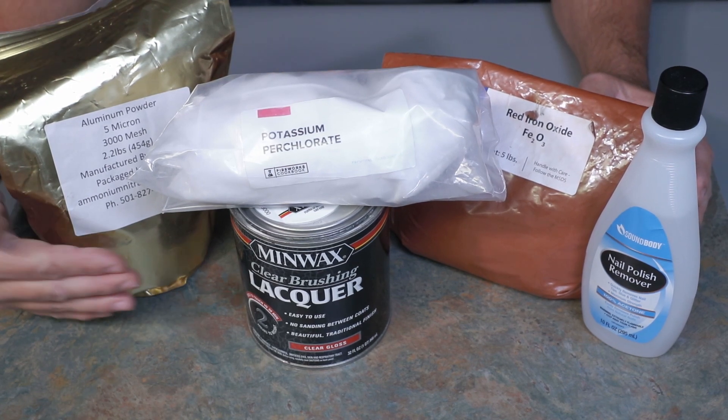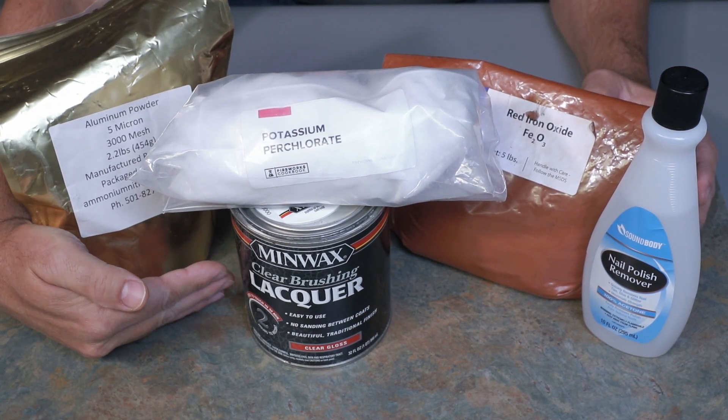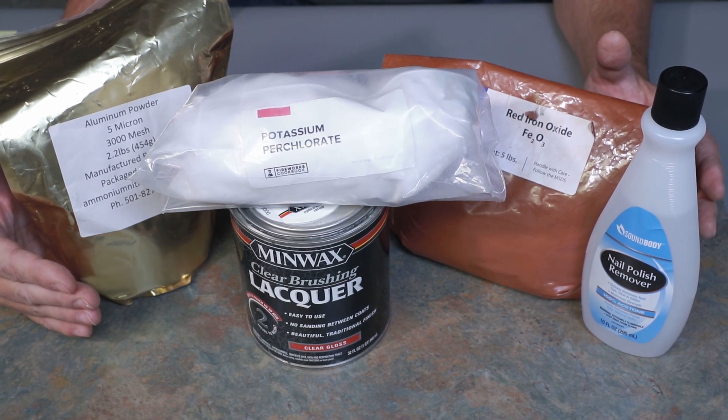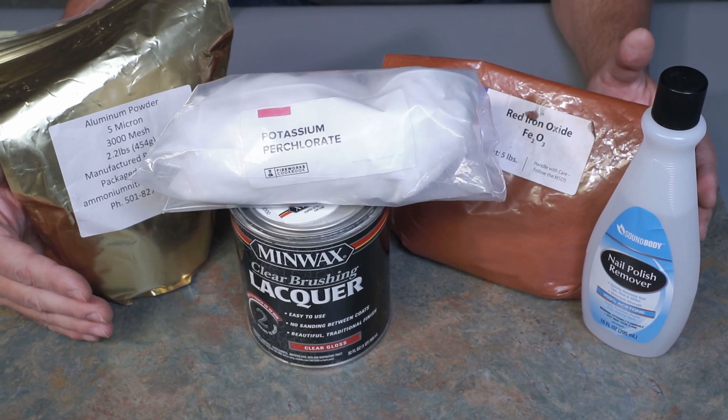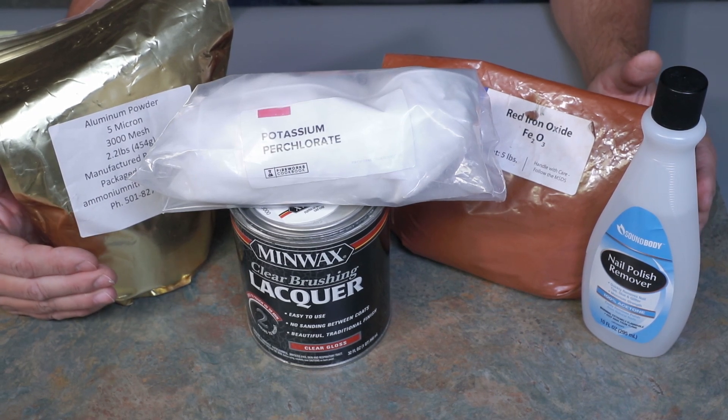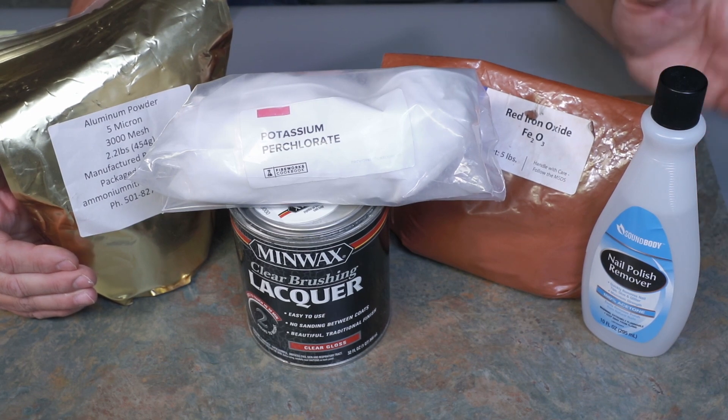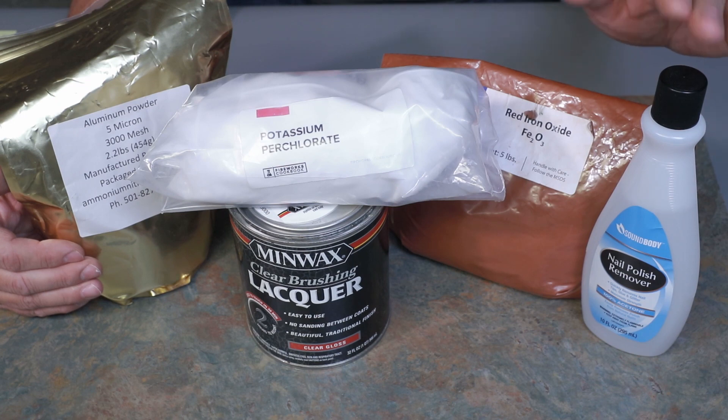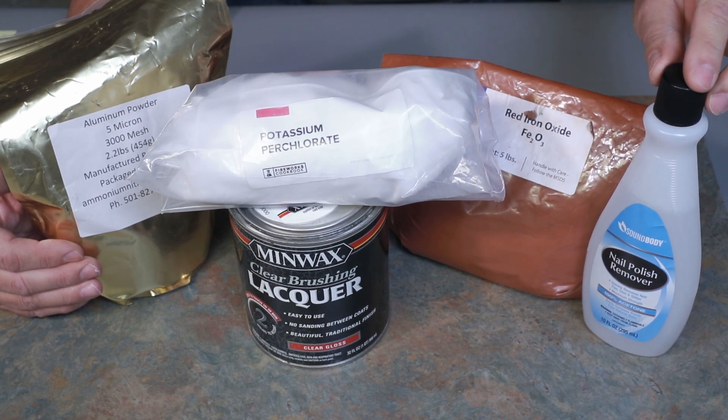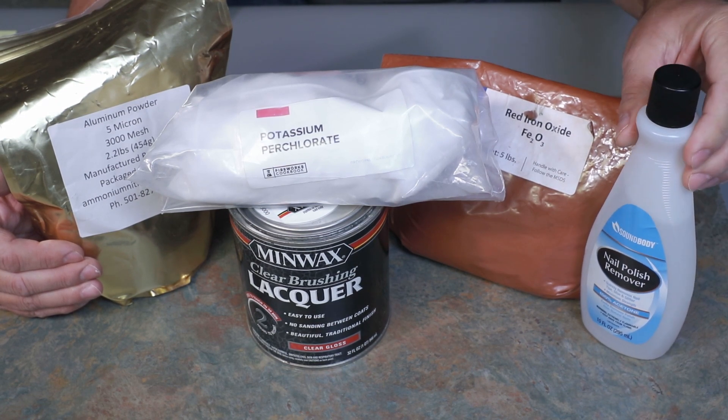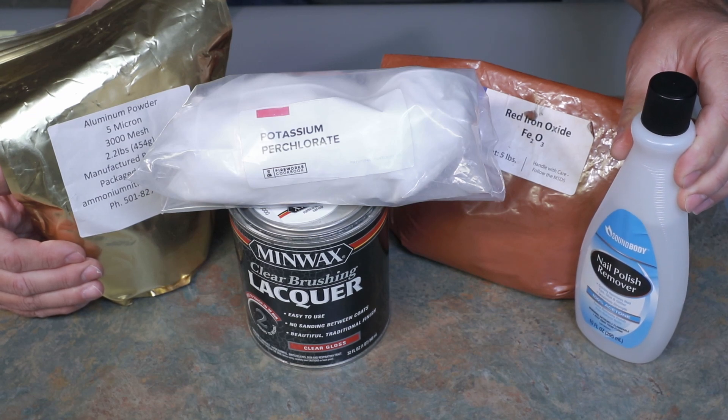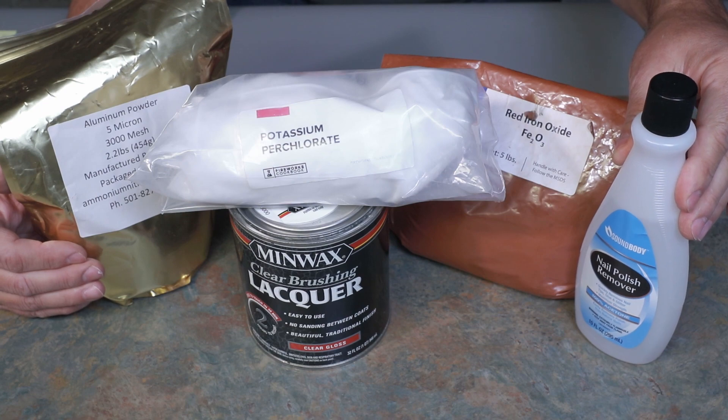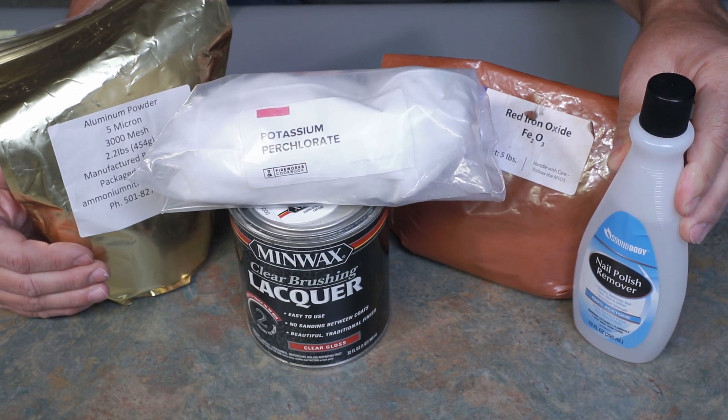You'll also use this nitrocellulose lacquer here, a regular brushing lacquer. If you don't have access to that, you can use clear nail polish. That'll work just as well, and probably even easier to mix up. I have nail polish remover, the acetone type. Make sure you get pure acetone. It makes it easier to pour out of this small bottle. Let's take a look at the powder.